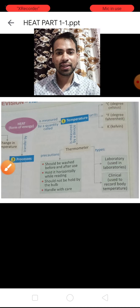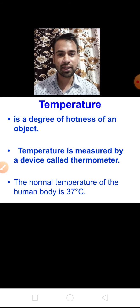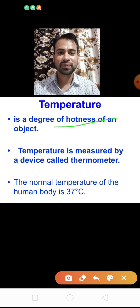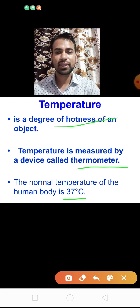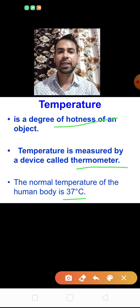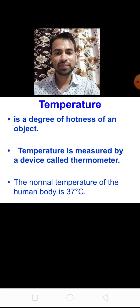A quick review: temperature is the degree of hotness of an object. It can be measured by a device that is thermometer. The normal temperature of the human body is 37 degree Celsius, or we can also say it is 98.6 degree Fahrenheit. So, 37 degree Celsius is equal to 98.6 degree Fahrenheit. This is about temperature.